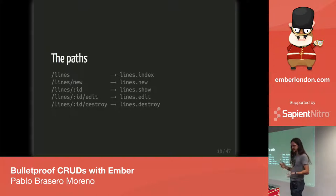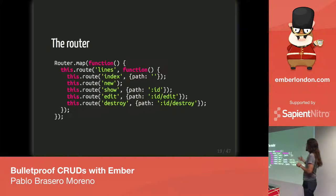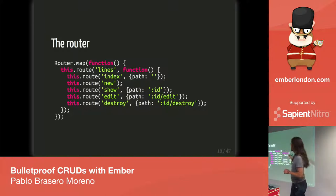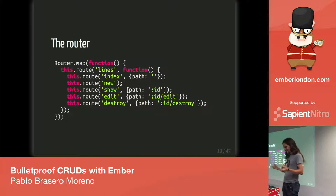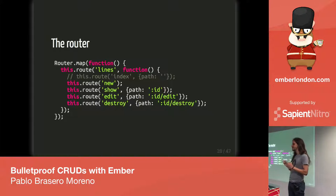I declared these paths on the router like this: I had a parent route called lines, and nested within it I had all the possible routes in the application. After some experimentation I realized I didn't really need to declare the index route, because in Ember as soon as you start nesting it will create an index route for you.